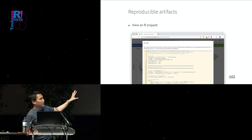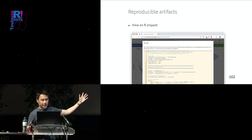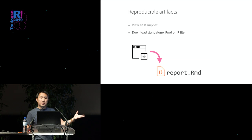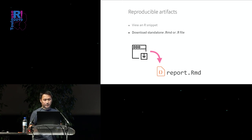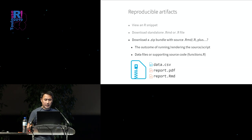To focus on reproducible artifacts: what are we talking about viewing or downloading when done with your analysis? The simplest way is a plain R snippet directly in the browser — a button that says 'view code' and you see something you can copy and paste. Another way is to download a standalone RMD or .R file so the user can edit and customize it. A third way takes that further: a zip bundle containing not only that source code, but any data or supporting files necessary for the code to run — and also the rendered results, such as a report.pdf.